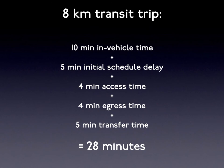Five minutes initial schedule delay, assuming random arrivals. Four minutes walk access time for the average passenger, walking 0.17 miles. Four minutes walk egress time to the final destination, though perhaps lower for downtown workers. Five minutes transfer time on average if effectively uncoordinated. So now, even with our idealized transit system, we have lost something like 10 + 5 + 4 + 4 + 5 = up to 28 minutes longer than the car for a five-mile, eight-kilometer trip.